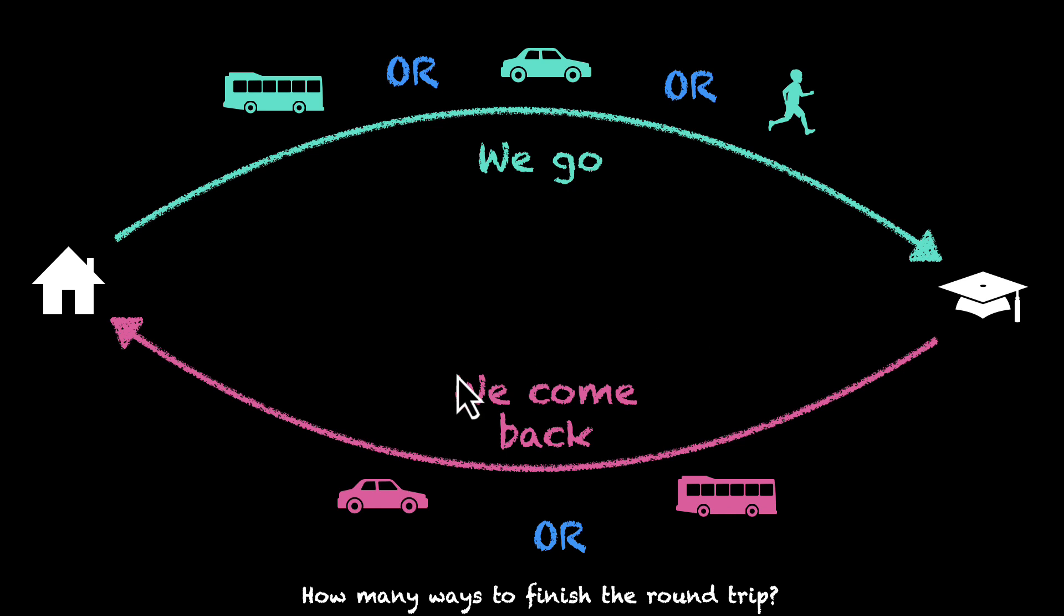But when we're making a round trip, when we're going to school AND coming back, we're doing both of them. We're going AND we're coming back. So how do we use OR and AND? OR gives us a plus sign. So we'll add a plus here, a plus here, and a plus here. And AND gives us a multiplication sign.